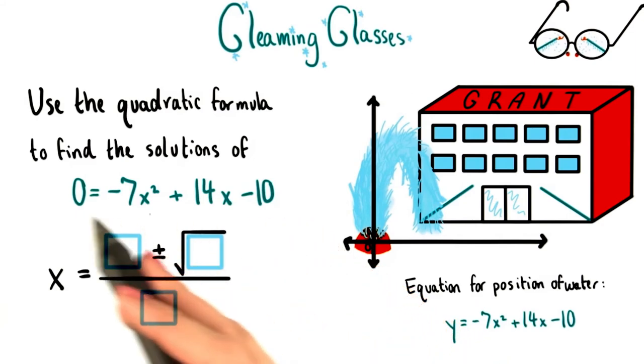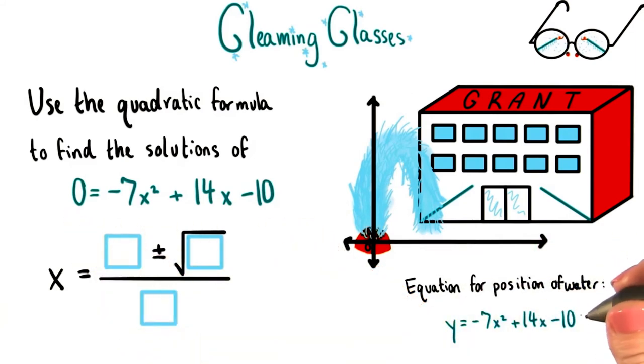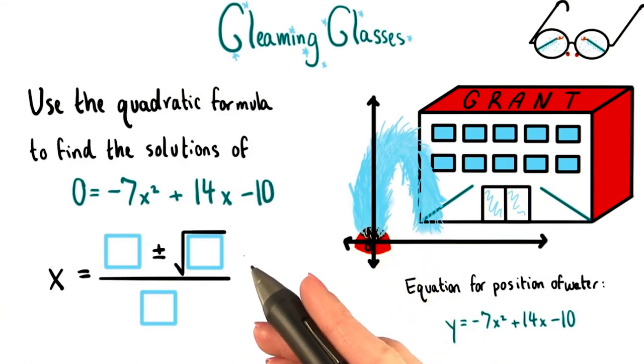In other words, if we solve the quadratic equation that goes along with this equation for our parabola, then we should get those two solutions, those two roots. Let's use the quadratic formula to see if Grant is right.